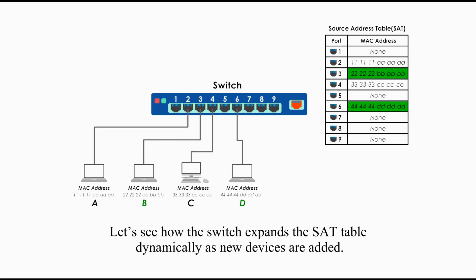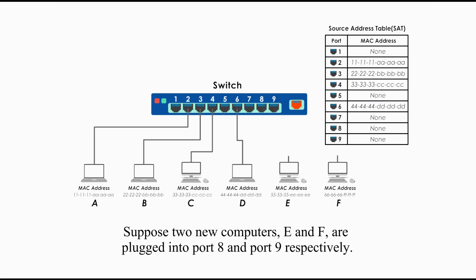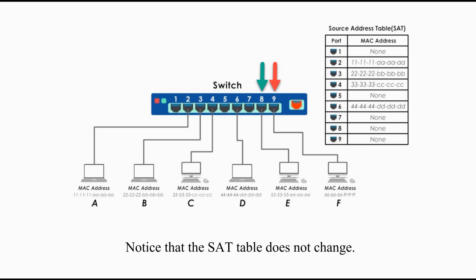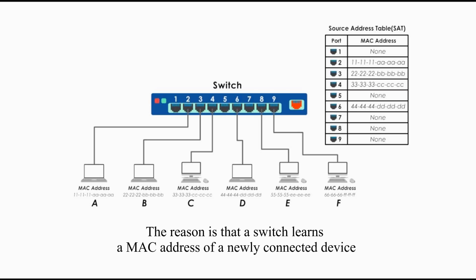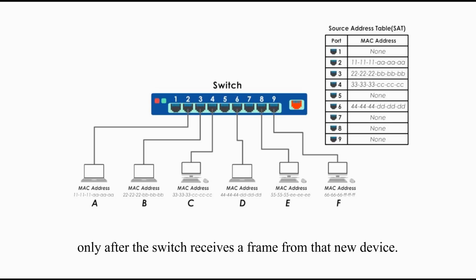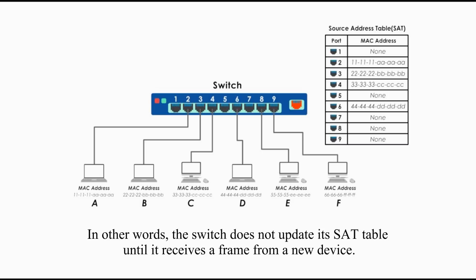Let's see how the switch expands the SAT table dynamically as new devices are added. Suppose two new computers, E and F, are plugged into port 8 and port 9 respectively. Notice that the SAT table does not change. The reason is that the switch learns the MAC address of a newly connected device only after the switch receives a frame from that new device. In other words, the switch does not update the SAT table until it receives a frame from a new device.